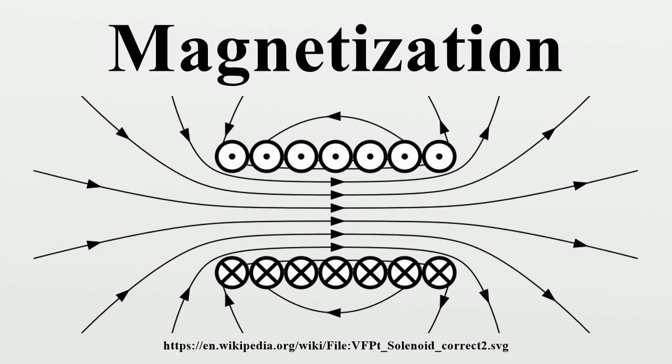so that the total current density that enters Maxwell's equations is given by where J F is the electric current density of free charges. The second term is the contribution from the magnetization, and the last term is related to the electric polarization P.